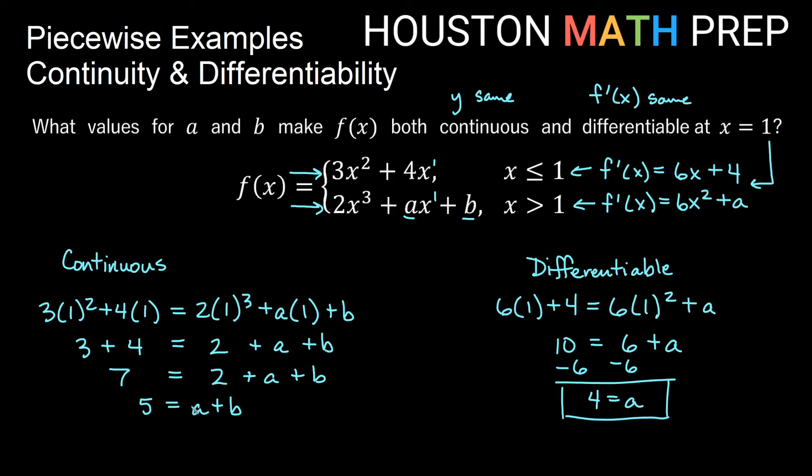And now if we look over here, knowing that a needs to be 4, that tells us here that 5 is equal to 4 plus b. And so if 5 is equal to 4 plus b, and we subtract 4 from both sides, I think we know that b needs to be 1 here. So because we had two equations for the two numbers we were trying to find, we were able to do it. So when a is 4 and b is 1, in other words, when this piece, the formula for it is 2x cubed plus 4x plus 1, then these will have the same y value and the same slope at x equals 1.